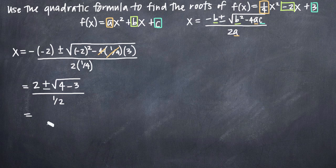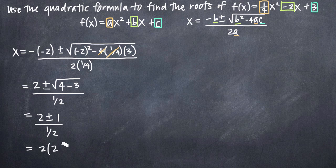When we simplify further, we'll see that we'll get 2 plus or minus the square root of 1, which we know will just be 1, all divided by one-half. Dividing by one-half is the same thing as multiplying by 2. So we'll get 2 times 2 plus or minus 1.